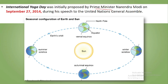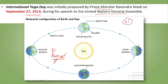International Yoga Day was initially proposed by Prime Minister Narendra Modi on September 27, 2014, during his speech at the United Nations General Assembly. The question of why 21st June was chosen has great cultural significance — 21st June is the summer solstice in the Northern Hemisphere, which is the longest day of the year. That is the cultural significance of this date. Additionally, you should know: the autumn equinox falls around September 22–23, the winter solstice around December 22–23, and the vernal equinox around March 21–22.